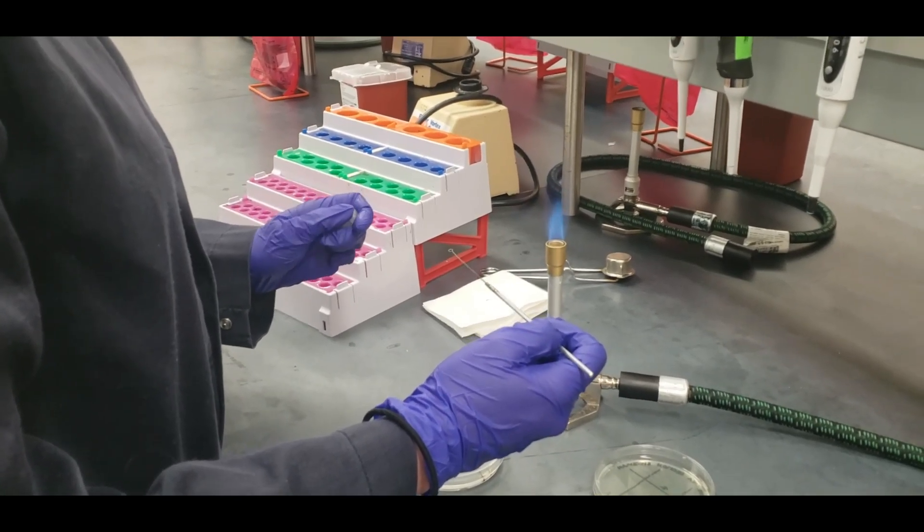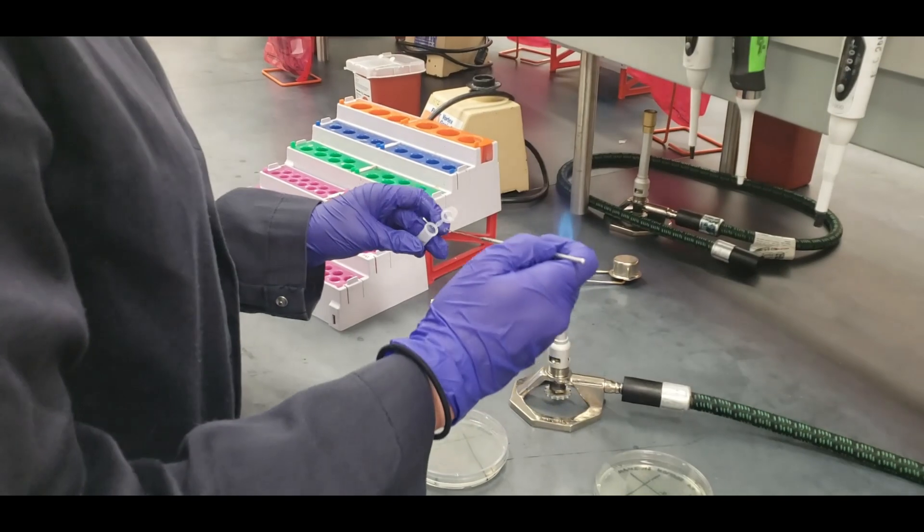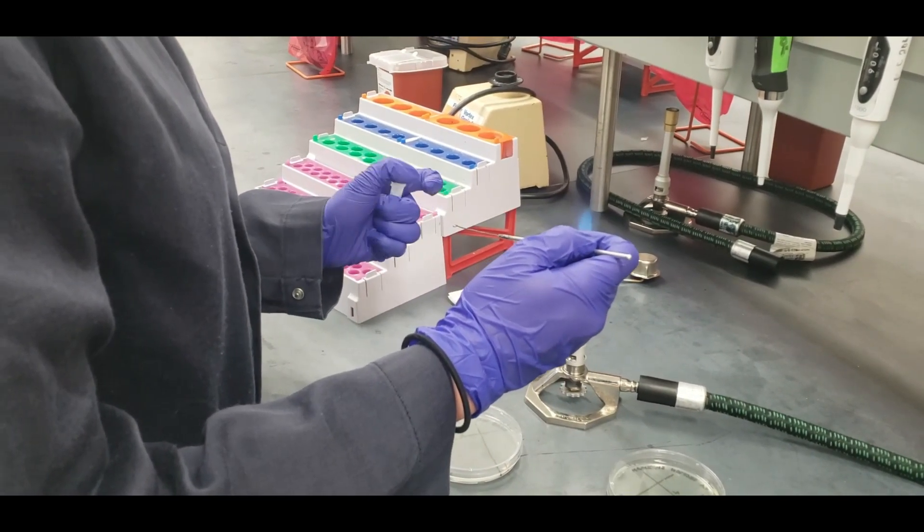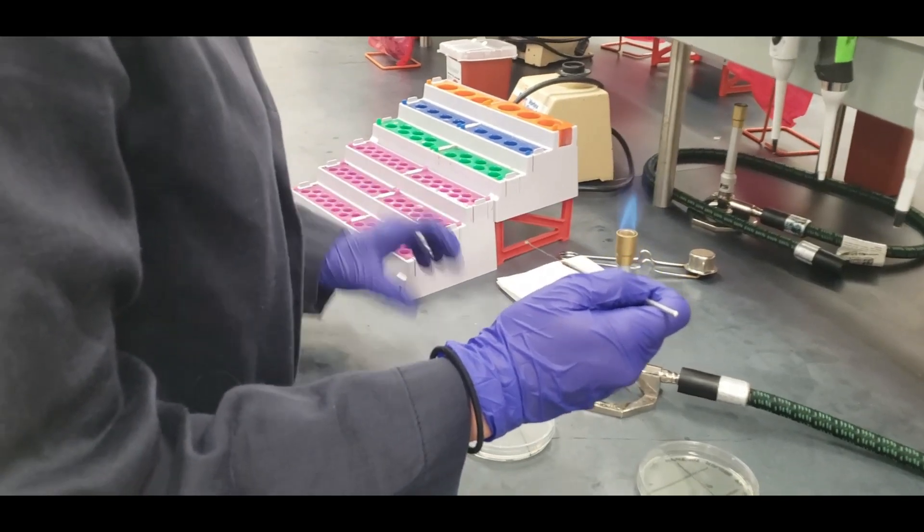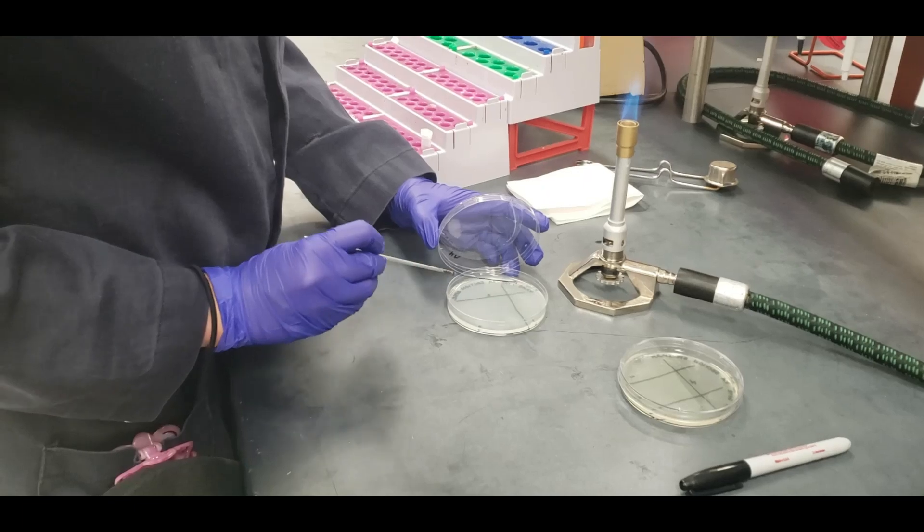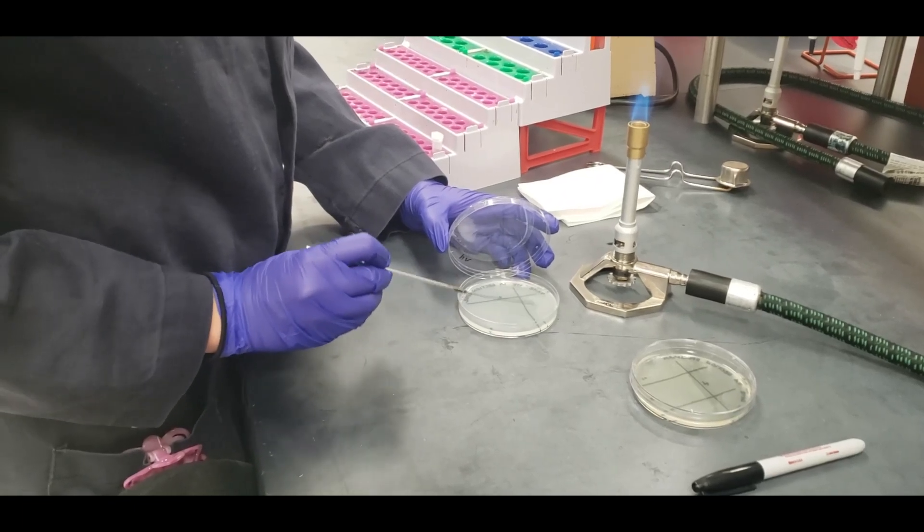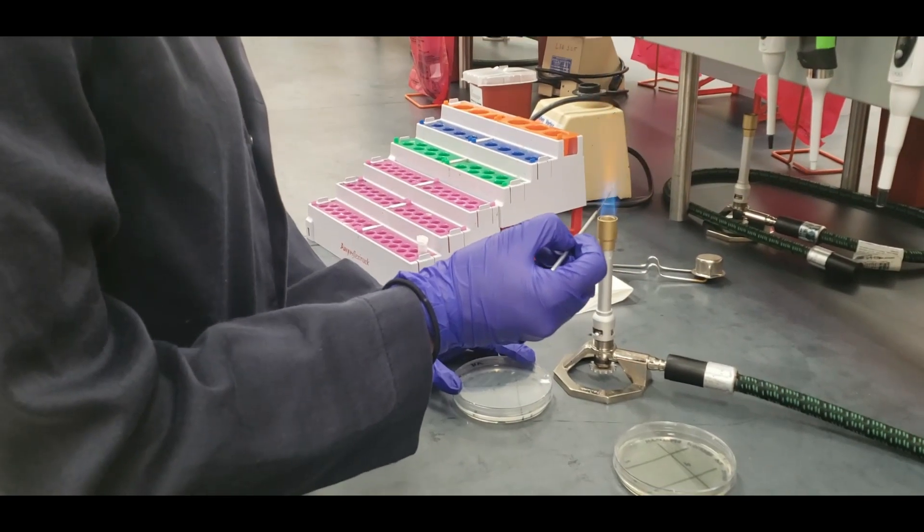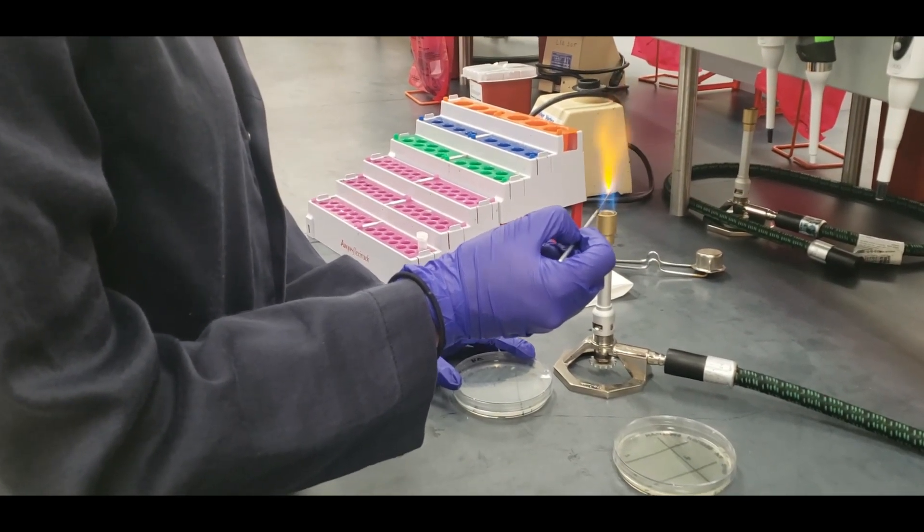You're going to stick your loop in your culture one time and streak the first section. Flame your loop, completely sterilizing it once more. Don't forget to let it cool.